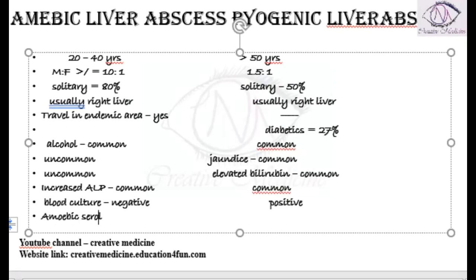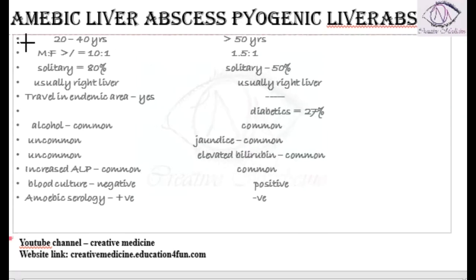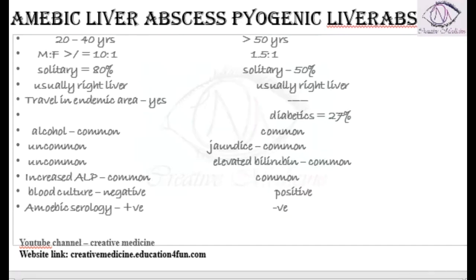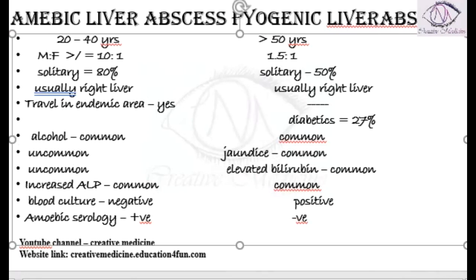Amoebic serology is positive for amoebic liver abscess, obviously because it is caused by an amoeba — Entamoeba histolytica — whereas amoebic serology is negative for pyogenic liver abscess.